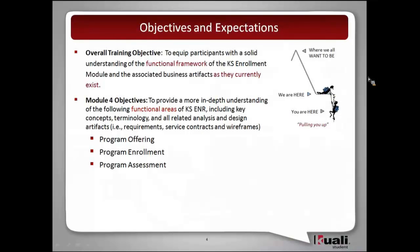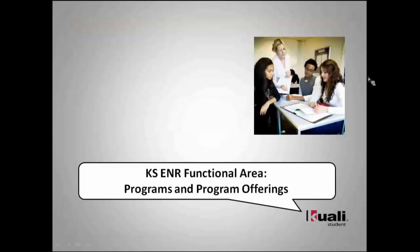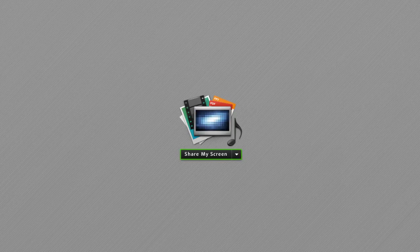As always, our overall objective for these trainings is to give you an understanding of our functional framework and the artifacts as they currently exist. For this module in particular, the objectives are to give you an in-depth understanding of the three functional areas: program offering, program enrollment, and program assessment, and how these things intersect with curriculum on one side and degree audit on the other. With that, I'm going to hand it over to Steve Barnhart from USC, who will walk you through programs and program offerings.